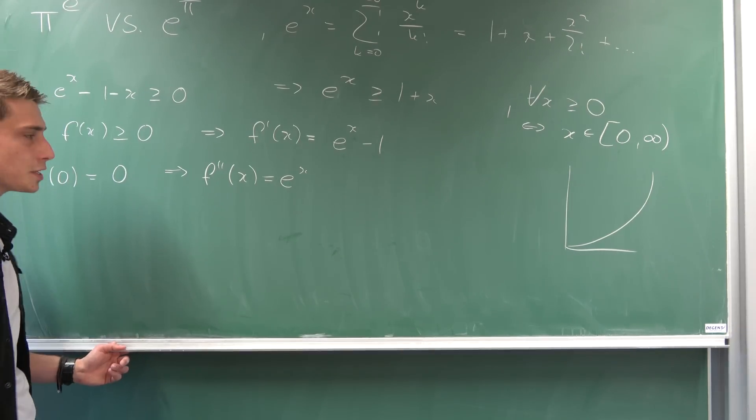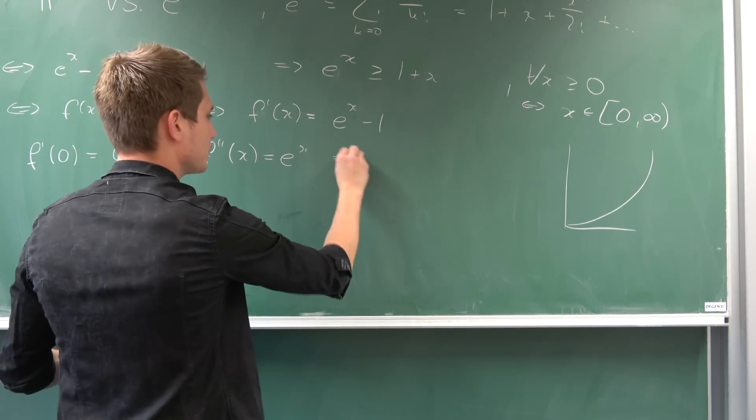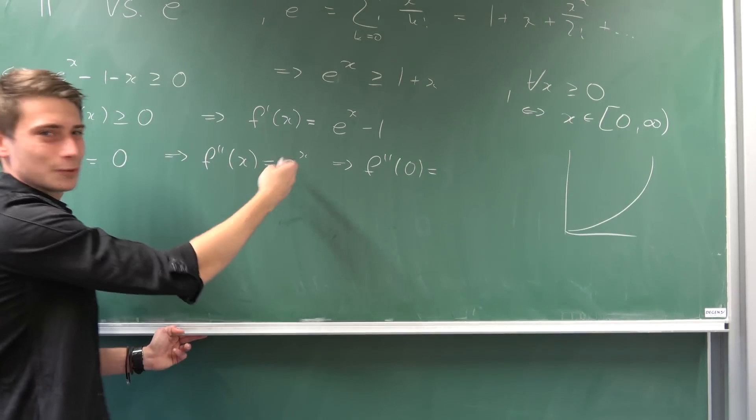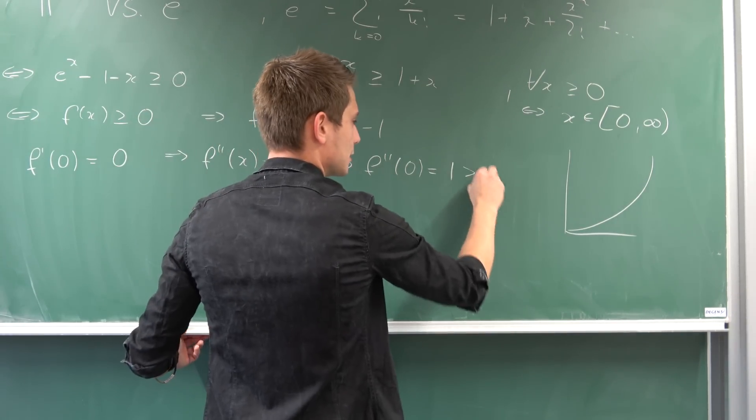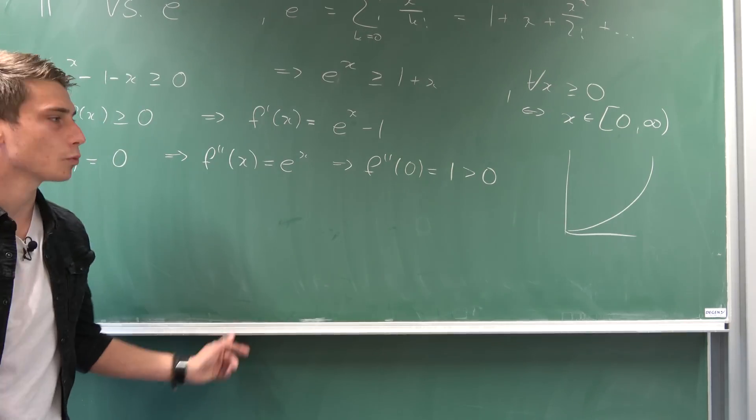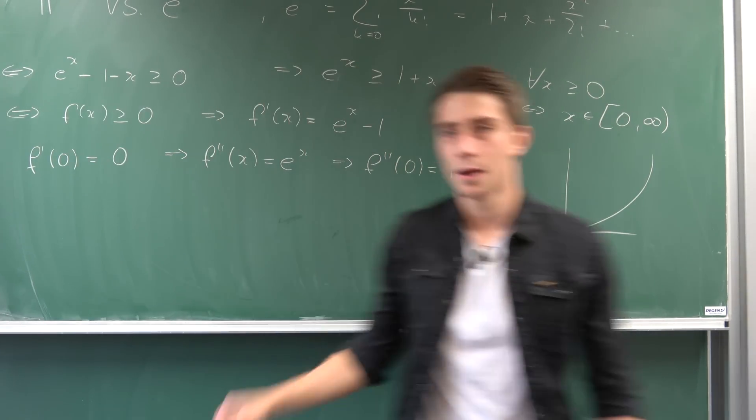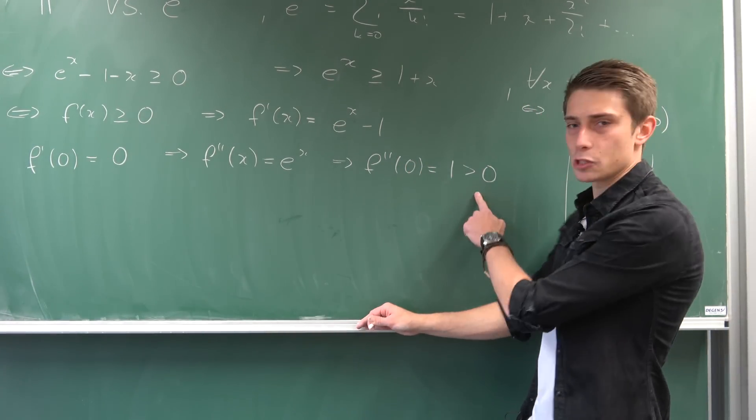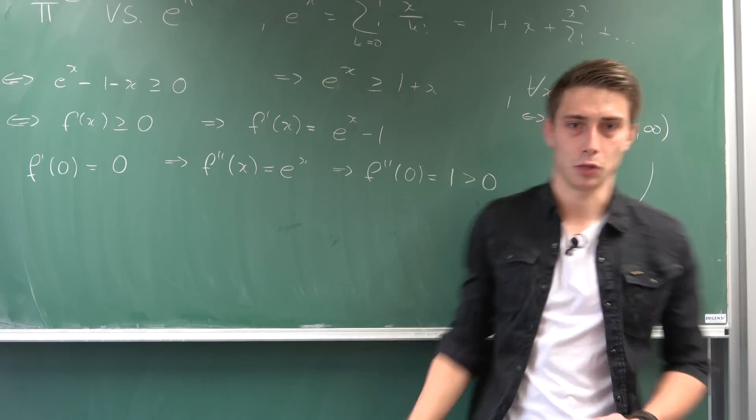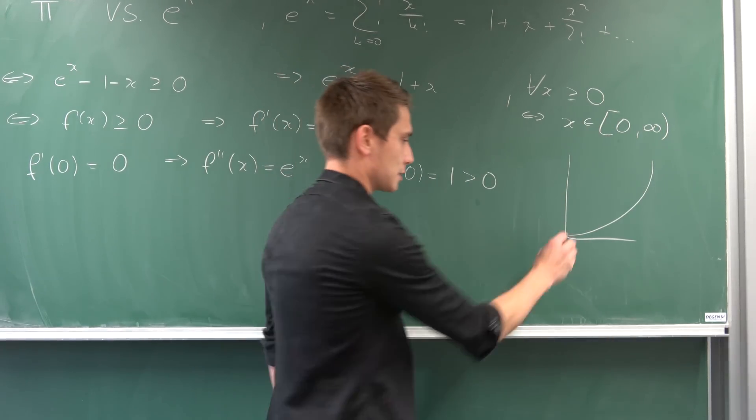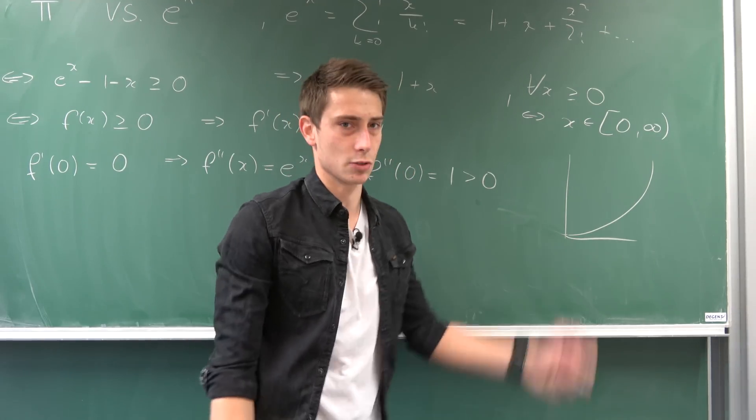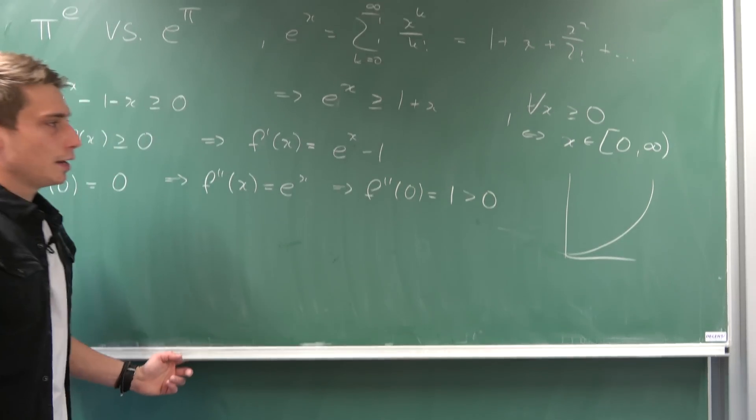So that also means f''(x) is nothing but e^x because negative one is going to vanish. And if we plug in zero into here, that also means f''(0) is nothing but one. And this is indeed strictly greater than zero since one is the successor of zero. So that means this point right here, x₀, admits to a minimum. Just like on my graph right here, this function is going to look something like this. But this thing right here admits to a minimum.